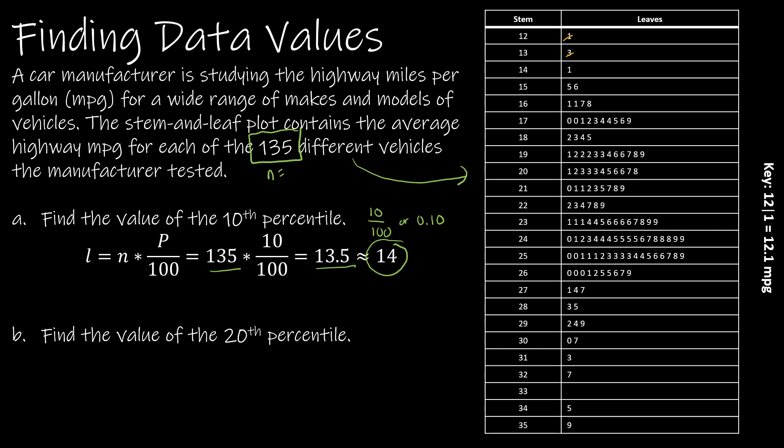So I would start counting 1, 2, 3, and so on up to 14. So that is my 14th value. Now keep in mind the key says that 12 and then the bar and then 1 means 12.1, so this means 17.3. So the value in position 14 is 17.3 miles per gallon. Now what exactly does that mean? That means 17.3 is greater than or equal to 10 percent of our data. If you just look at the data that we have here, that pretty much makes sense—we're saying 10 percent is here, which leaves the other 90 percent here.